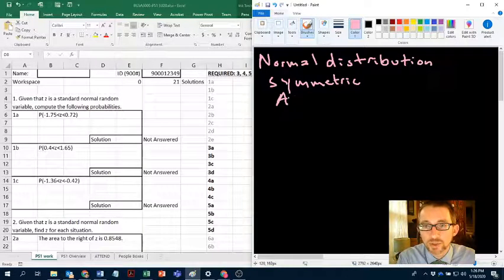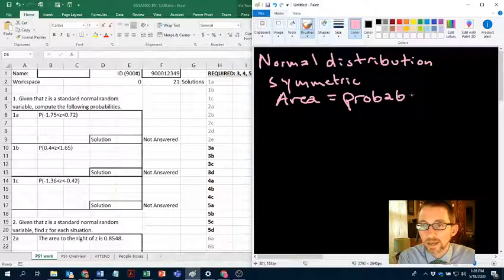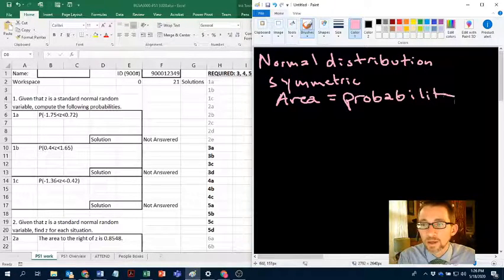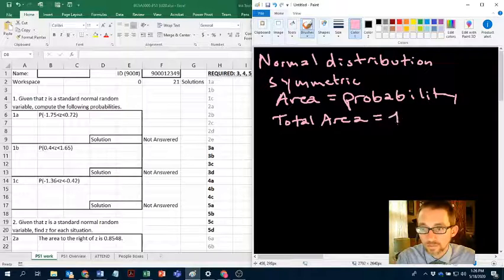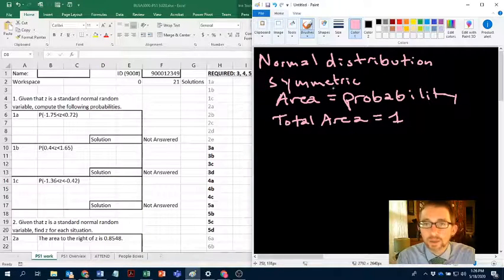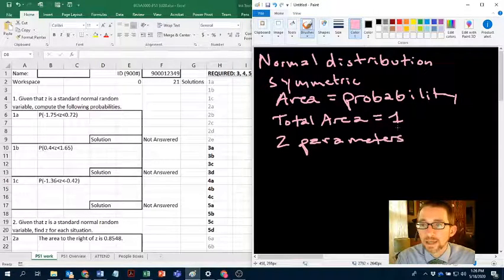For probability distributions that are continuous, the area is a metaphor for the probability. It's a shape, essentially, that captures probability. So since the area is probability, the total area...